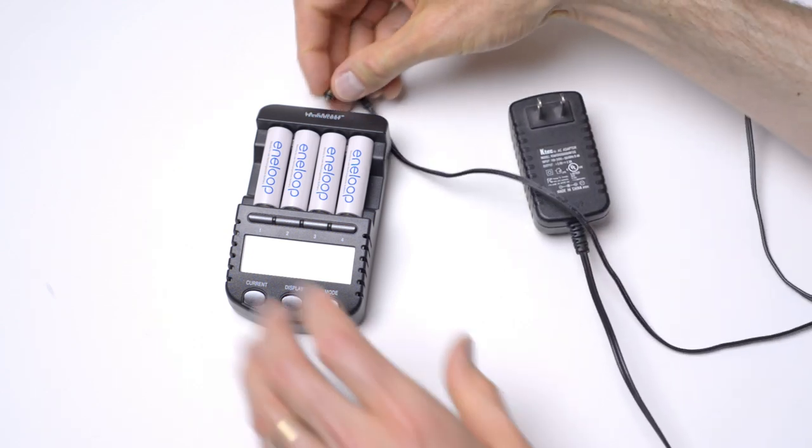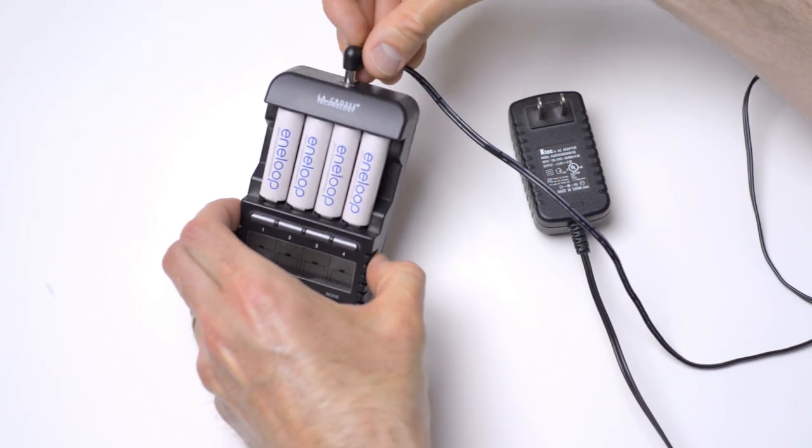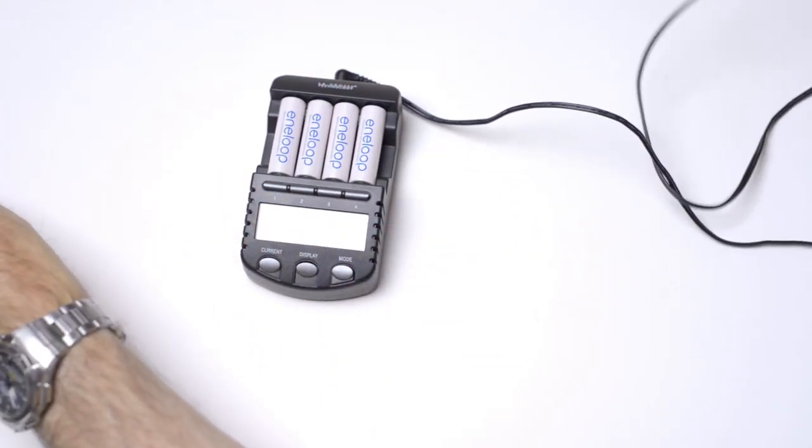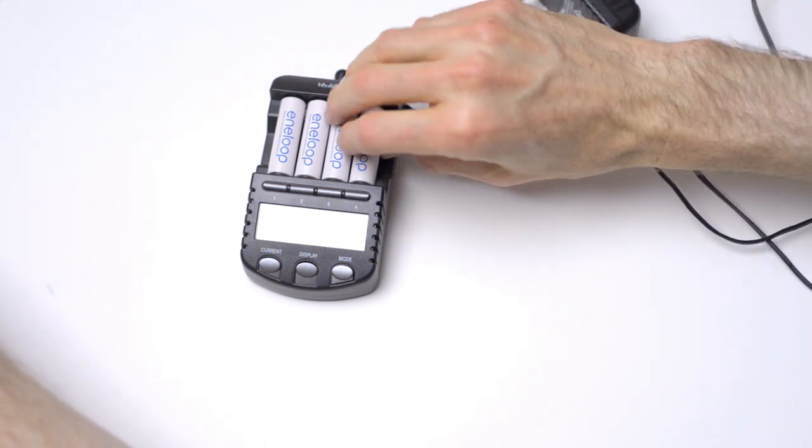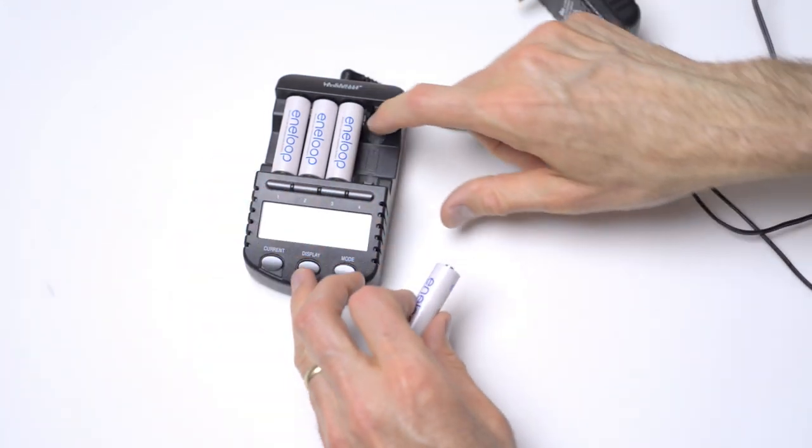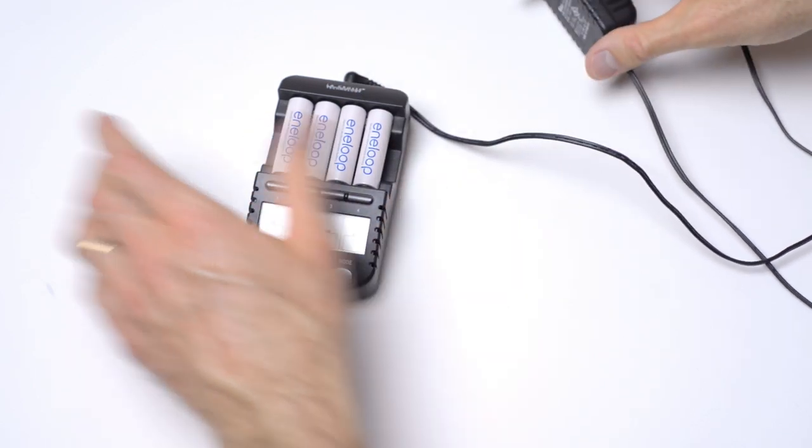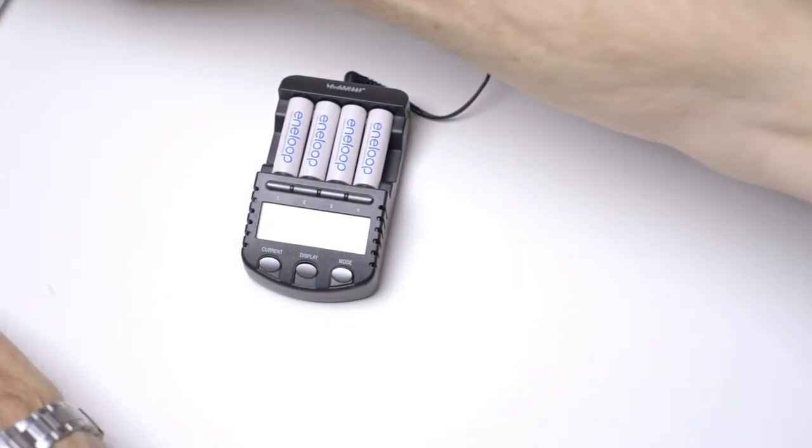One of the things that the charger has is it has an overheat sensor. So it knows if any of the batteries are getting too hot, and it will actually shut down the charging on that battery. Also, when it's done charging, it will do a trickle charge, so it'll keep it charged up until you take them off of the actual charger itself.